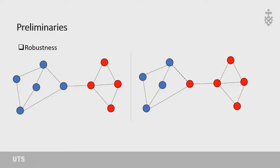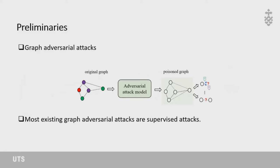There are two main research streams: designing effective adversarial attacks and defending against them. In this work we focus only on attacks. The basic framework of graph adversarial attacks takes a clean graph as input, and the attack model generates a poisoned graph that is slightly different from the original. Using this poisoned graph, the target model has degraded performance — some nodes might be misclassified and link prediction results may also be affected. Most existing graph adversarial attacks are supervised, meaning they need labels to decide how to poison the graph.